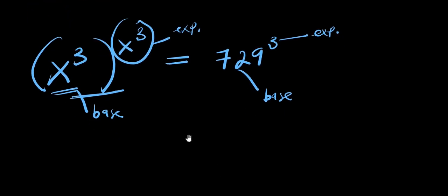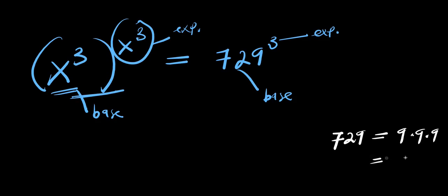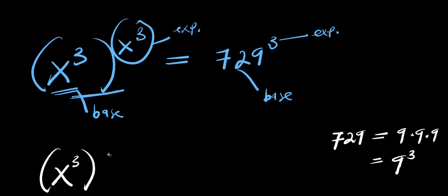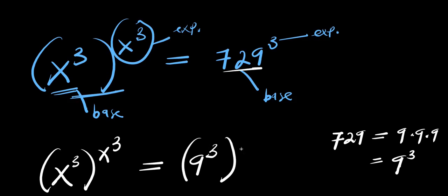To do that, I'm going to consider the factors of 729: 9 times 9 times 9 equals 729, meaning 729 equals 9 to the power of 3. So I'm simply going to have x to the power of 3, raised to the power of x to the power of 3, equals 9 to the power of 3, raised to the power of 3.